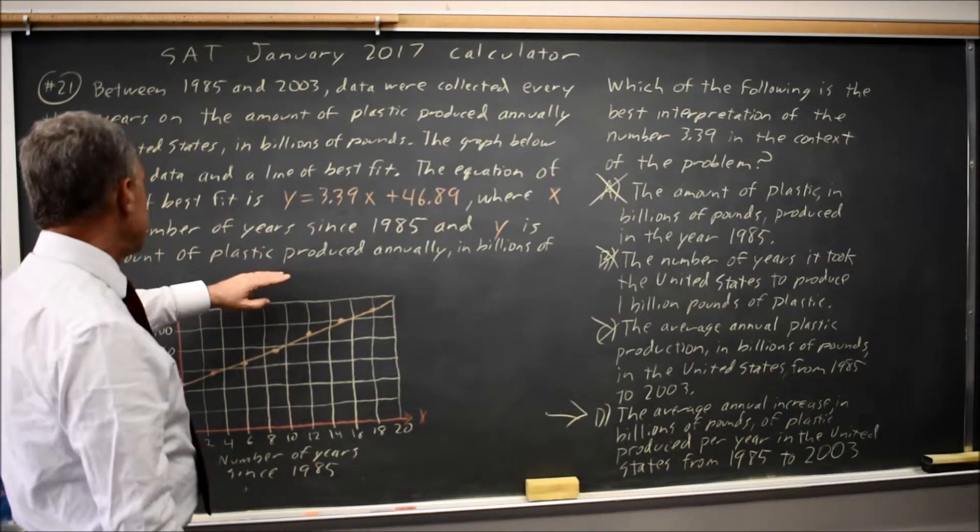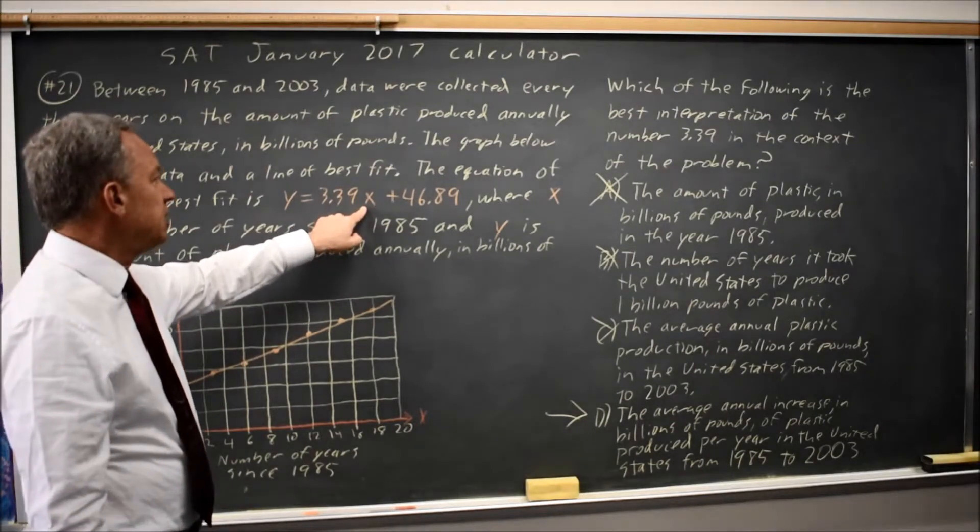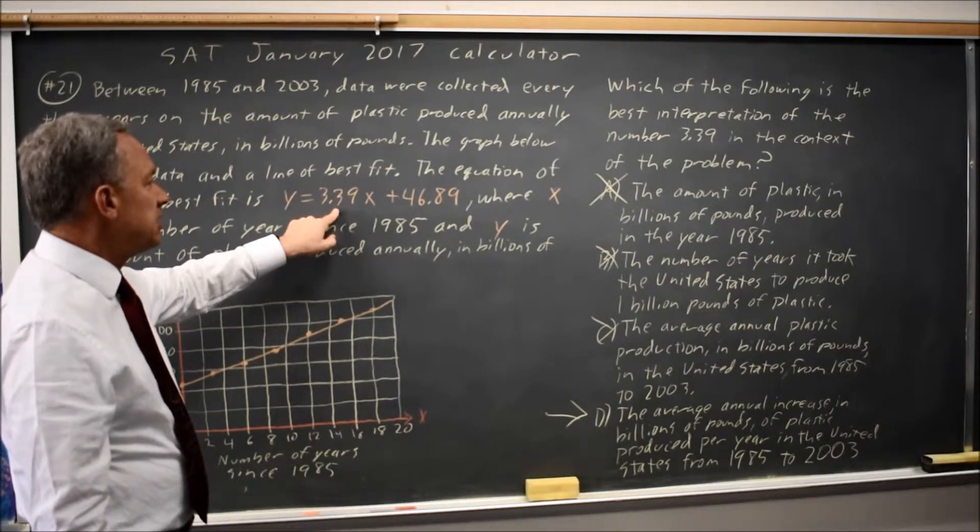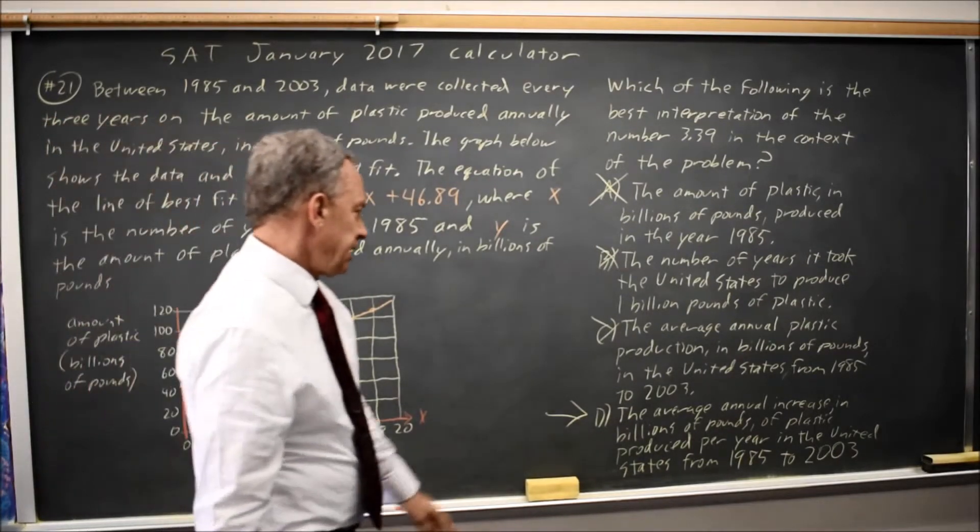Y is plastic production in billions of pounds. X is years since 1985. So, 3.39 is the number of additional billions of pounds produced in the United States each additional year.